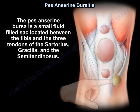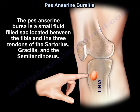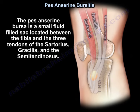The pes anserine bursa is a small fluid-filled sac located between the tibia and the three tendons of the sartorius, gracilis, and the semitendinosus.